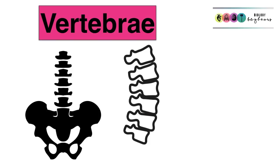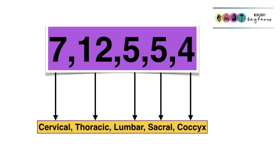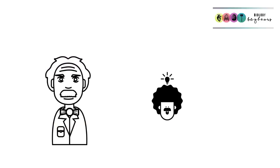It's really important that you know the spine is made up of individual bones known as the vertebrae — 33 of them: 7 cervical, 12 thoracic, 5 lumbar, 5 sacral, and 4 coccyx or coccygeal. It's really important that you know the name and number of each of those vertebrae.